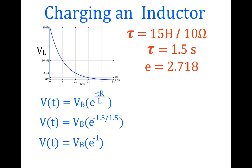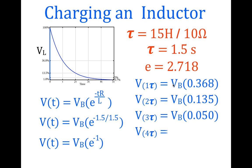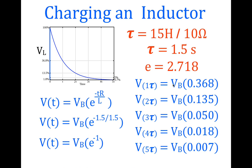We do the same for voltage, except this time it's simply e raised to the power of minus T over L/R — without the 'one minus.' After one time constant, 1.5 seconds divided by 1.5 gives e to the minus 1, which equals 0.368 or 36.8% of the initial source voltage. We continue: e to the minus 2, e to the minus 3, e to the minus 4, and e to the minus 5, which gives 0.007 or 0.7% of the original maximum voltage across the inductor.